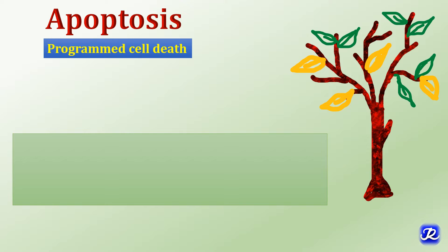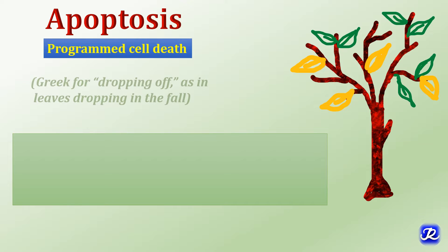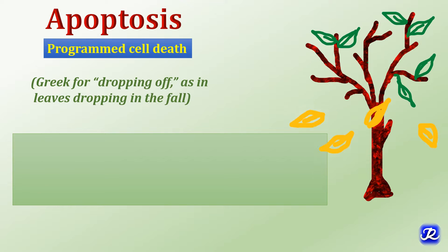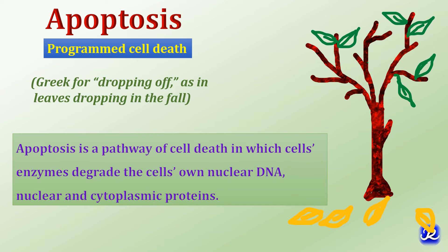Apoptosis is also called programmed cell death. Many cells can precisely control the time of their own death by this process. It is derived from a Greek word for dropping off, as in leaves dropping in the fall. It is a pathway of cell death in which cells' enzymes degrade the cell's own nuclear DNA, nuclear and cytoplasmic proteins.